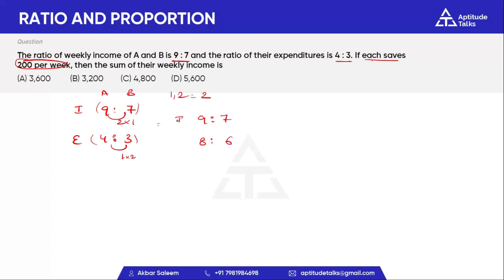This is the income and expenditure of A and B. The ratio difference is equal to 1. Each of them has the same difference — here is 2 and here is 2, so the difference is the same.